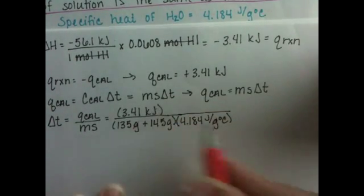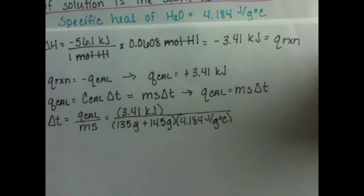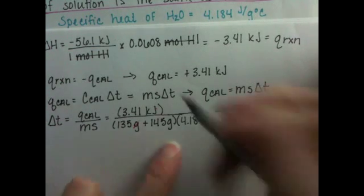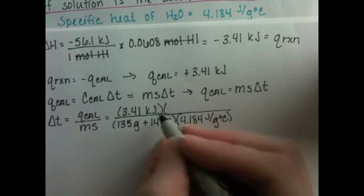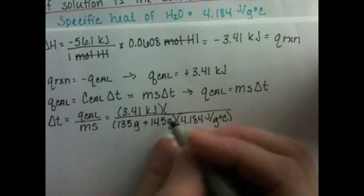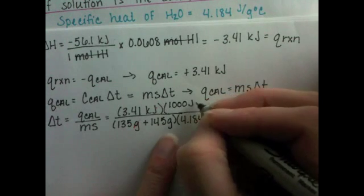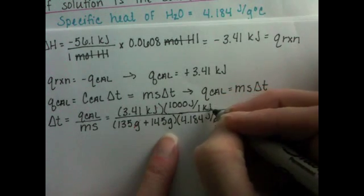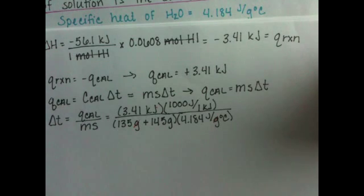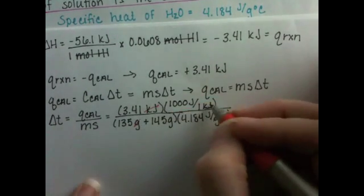Your kilojoules and joules aren't going to work out so great unless we do a conversion, which is really simple for us to do. We'll do it up on top and convert these kilojoules to joules. There are 1,000 joules in every kilojoule, and so our kilojoule units will cancel.